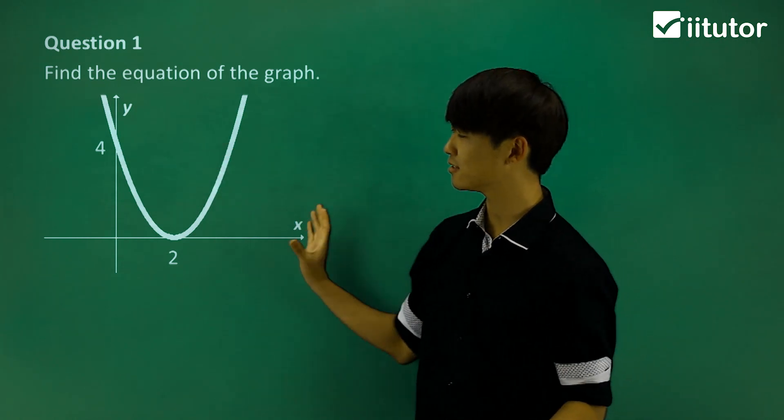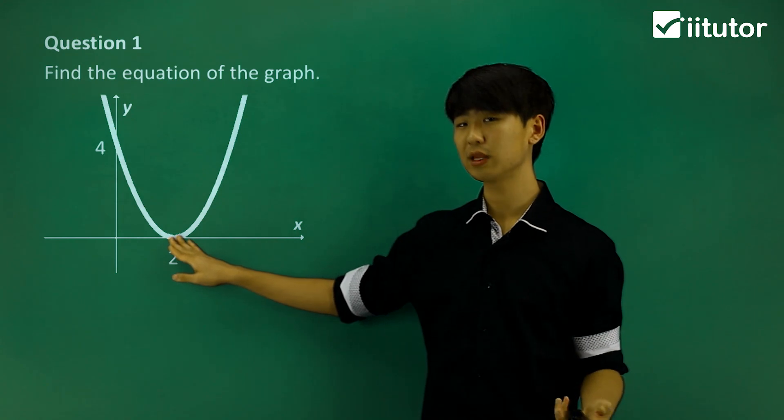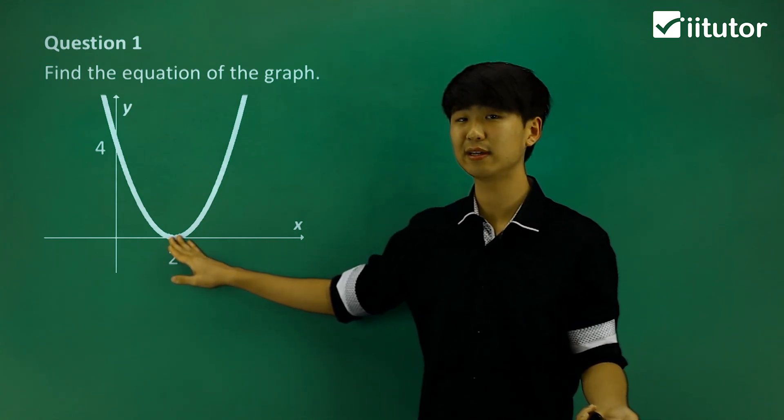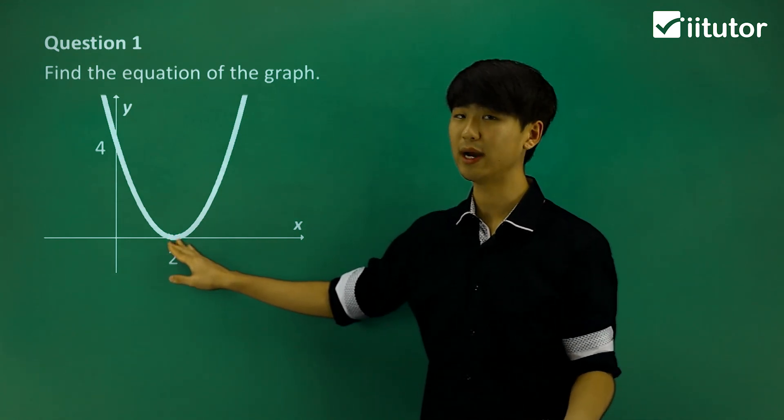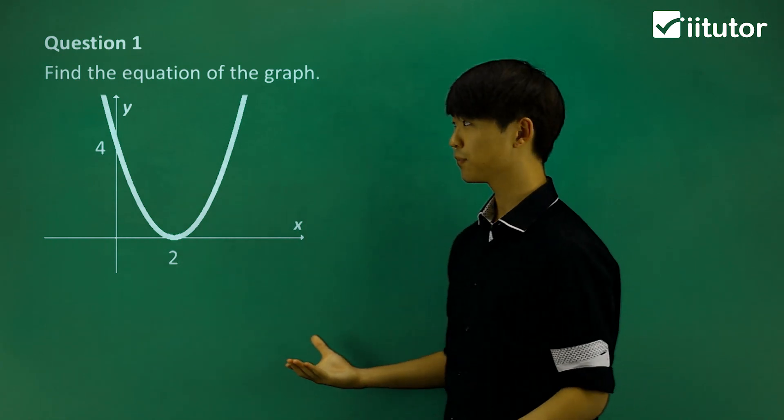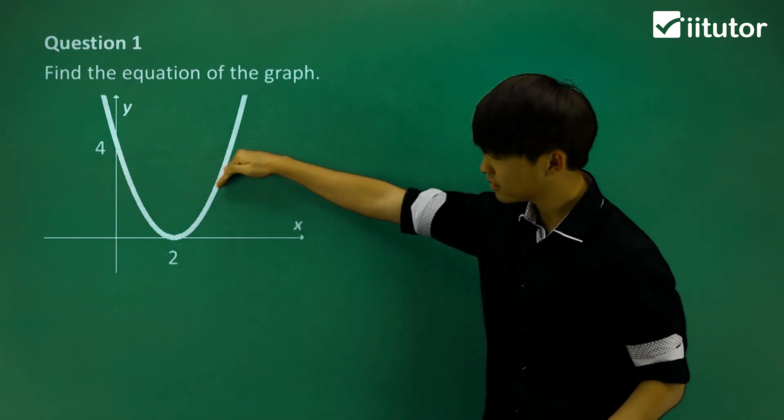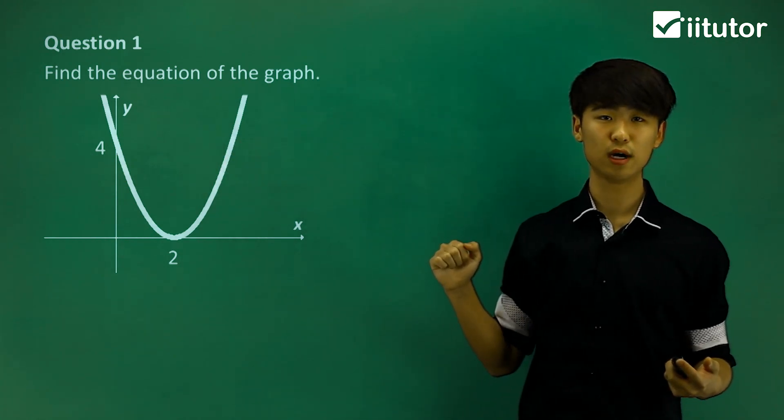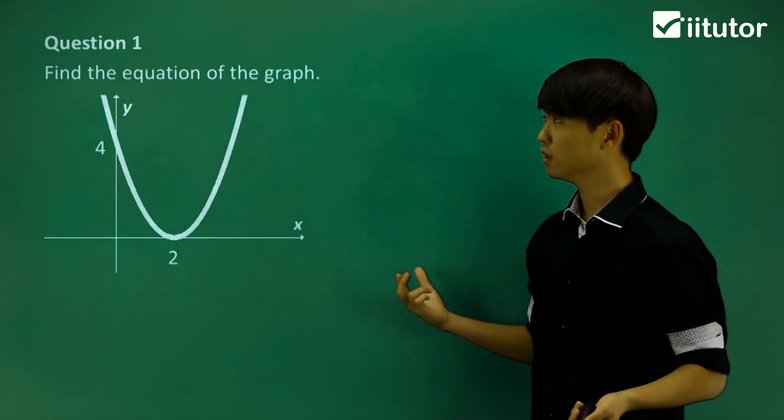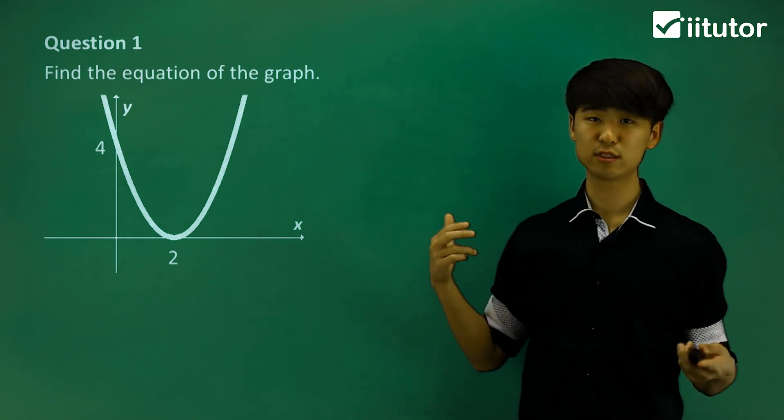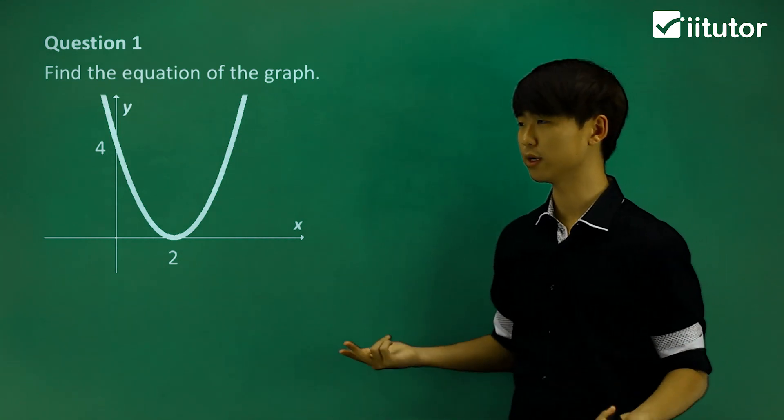So we can see that this graph has an intercept at x is equal to 2. However, we can also read it as passing through this point twice, which we call a double root. So finding the equation of these quadratics that have double roots, how are we going to do it?